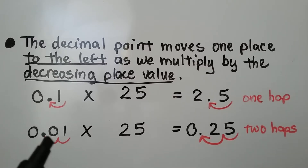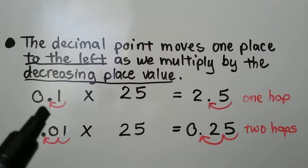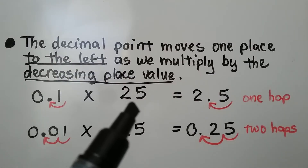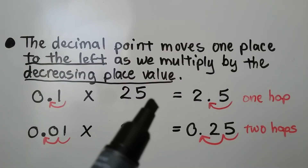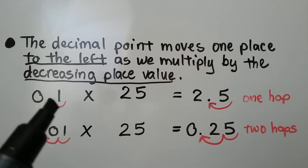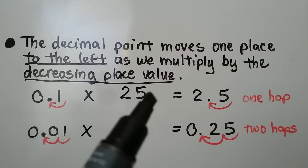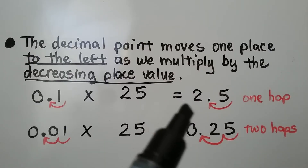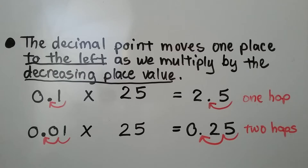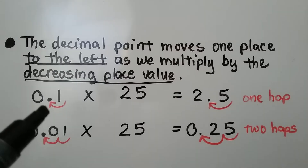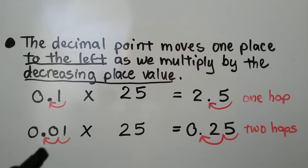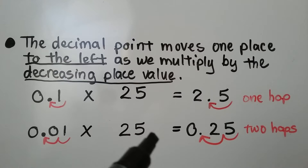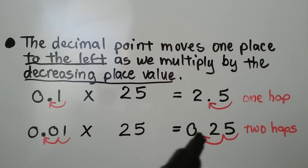The only thing that's happening is the decimal point is going to move. So if we have 1 tenth times 25, which is a whole number, we know the decimal point would be over here. Because we're multiplying it by 1 tenth, it's going to move one place to the left as 2 and 5 tenths. If we have 1 hundredth times 25, the decimal point is going to move 2 hops to the left. We'll have 25 hundredths.